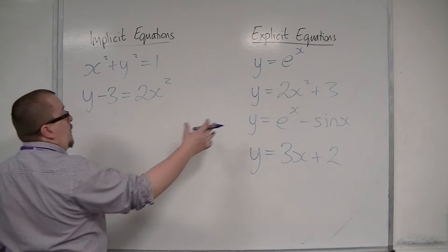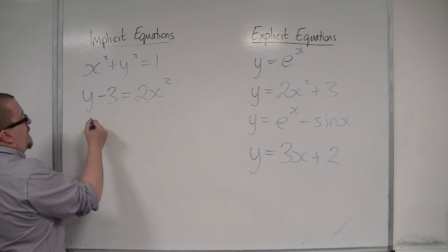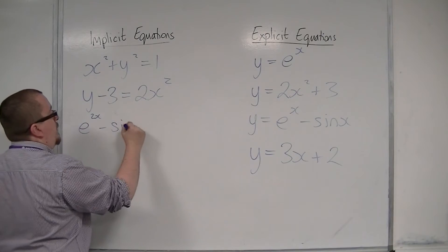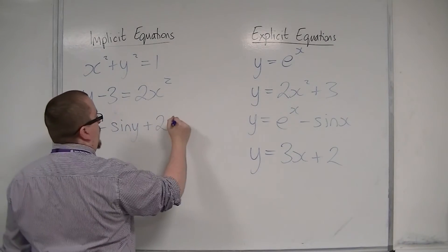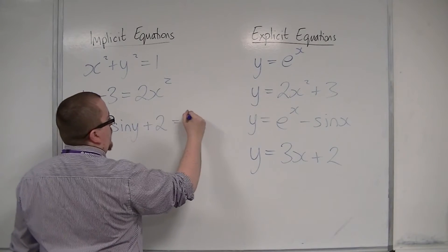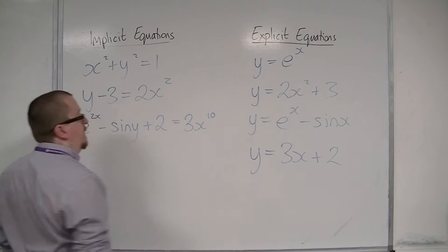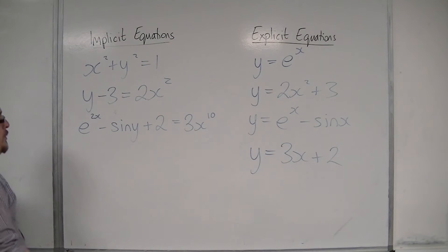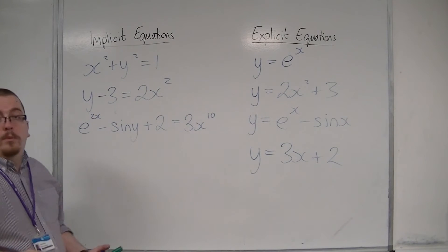So in a similar way, I could have things like e^(2x) - sin y + 2 = 3x^10. That's another implicit equation, and you can come up with all sorts of horrible-looking things.